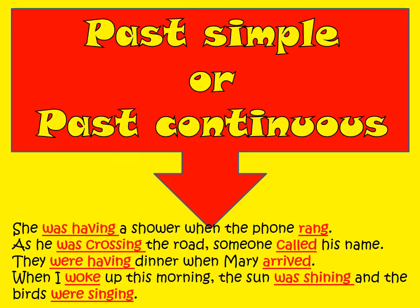She was having a shower when the phone rang. So there was an action that was in progress in the past, and then an interrupted action came to it. She was having — this is a continuous action in the past — and the phone rang, so it interrupted it. As he was crossing the road, someone called his name. So as he was crossing the road, it was an action in progress, and then an interrupted action comes to it.